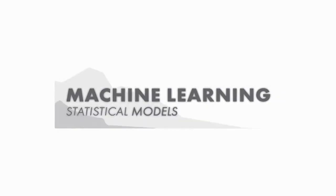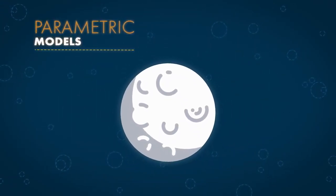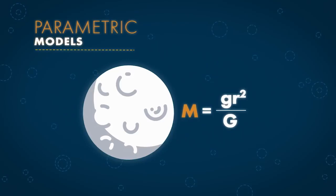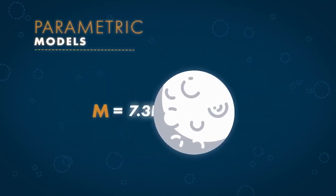Machine learning is all about statistical models. You probably know about parametric models, like when you're calculating the mass of the moon and you have a formula. If you know the variables, you can calculate the answer by plugging them in and doing the math.